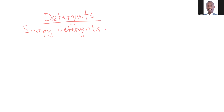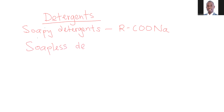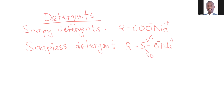The general formula of a soapy detergent starts off with an R, which is an alkyl group, then you end up with COO and then NA — that is the soapy detergent. Then you go to the soapless detergent. Here we have our R, but then it is joined up with S — double bond O, double bond O — then O and NA. Usually we put a negative and a positive here just to show that the soap has both the non-polar alkyl group and the polar end.